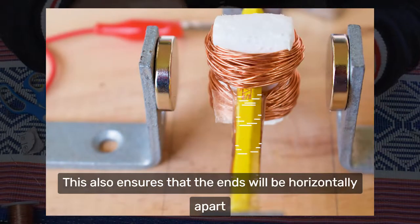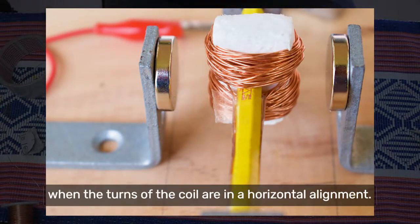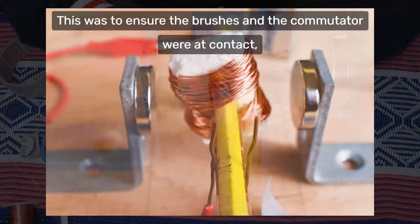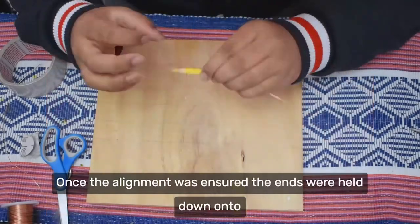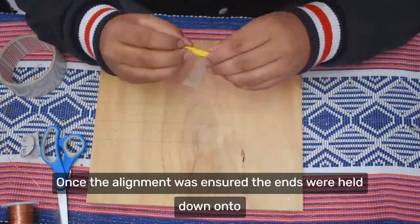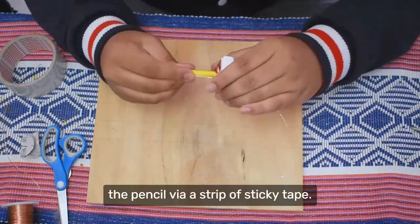This also ensures that the ends will be horizontally apart when the turns of the coil are in a horizontal alignment. This was to ensure the brushes and commutator were at contact when the torque was at a minimum. Once the alignment was ensured, the ends were held down onto the pencil via a strip of sticky tape.